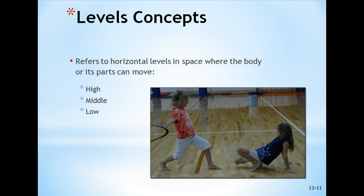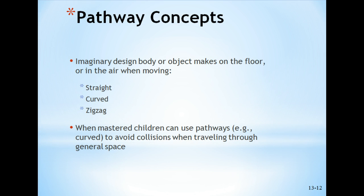General space is one of the hardest concepts for children to get, especially young children. Children can also stay in self-space and practice different levels. Levels refer to the horizontal levels in space where the body or its parts can move — either at a high level, a low level, or a middle level. It is also a way we can catch things or manipulate objects at different levels. Pathways are a little bit harder for pre-K and kindergarten students — it's an imaginary design the body or object makes on the floor or in the air: straight, curved, or zigzag. Many pre-K students do know what a zigzag is.